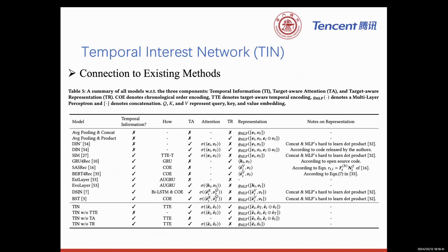In this table, we summarize all existing user interest models regarding TRN's three components. Each model can be regarded as an ablated variant of TRN, missing one or several components. This further explains why they struggle to learn the semantic temporal correlation and have performance deterioration.